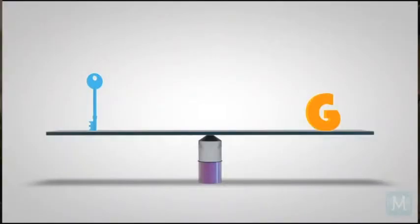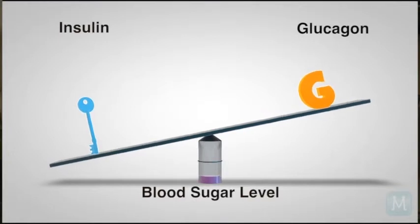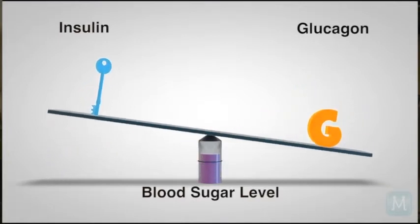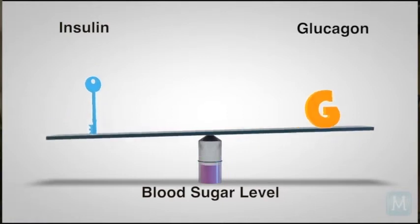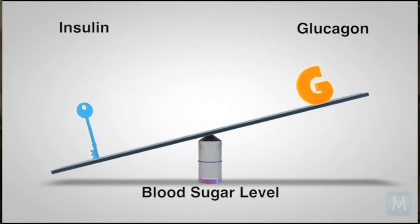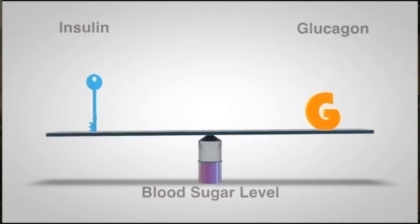While insulin empties the bloodstream of its sugar, glucagon stimulates the liver to bring sugar stores up. These two hormones work in concert with one another, like a seesaw. When one is high, the other is low, and they try to regulate blood sugar to a very tight control.